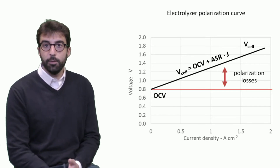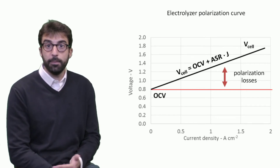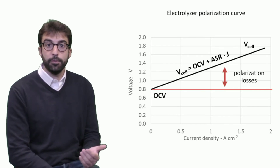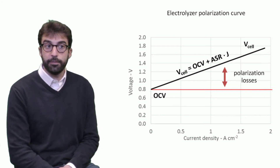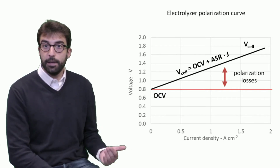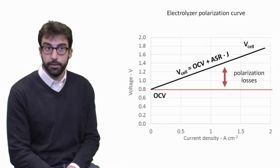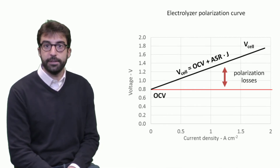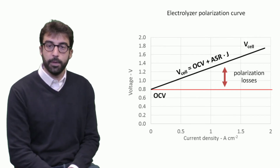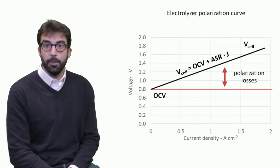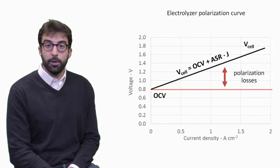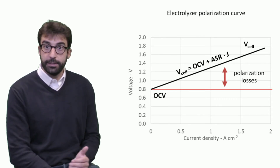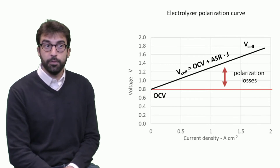These losses increase with current. In this simplified example we use a linear approximation to show how this can be modeled. Starting from the OCV, voltage increases as a direct function of current density J, multiplied by what is called the area-specific resistance (ASR), which is treated here as a constant. So our cell voltage increases from OCV up to higher values as current density rises.